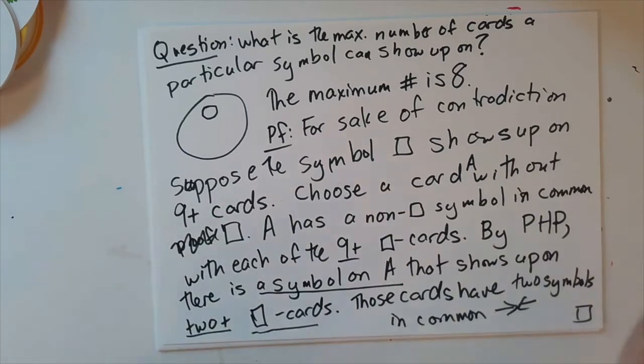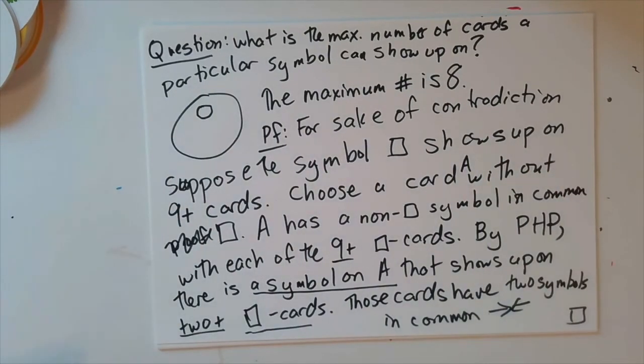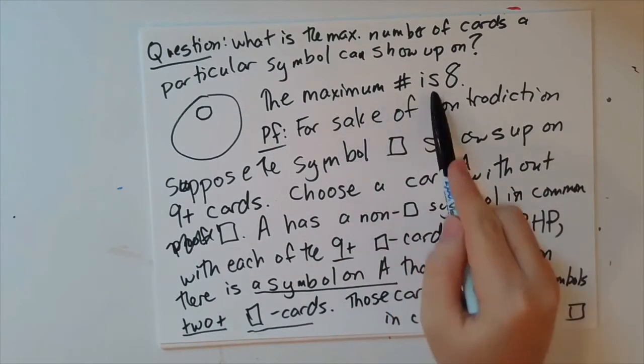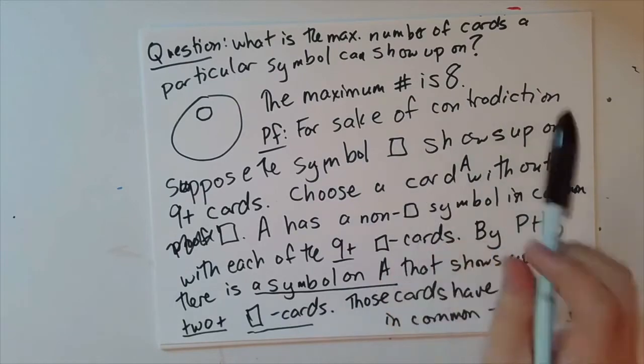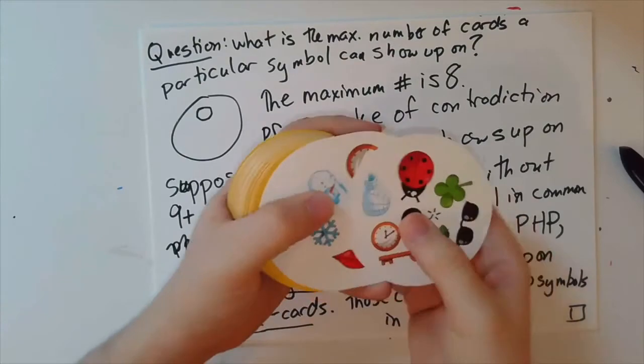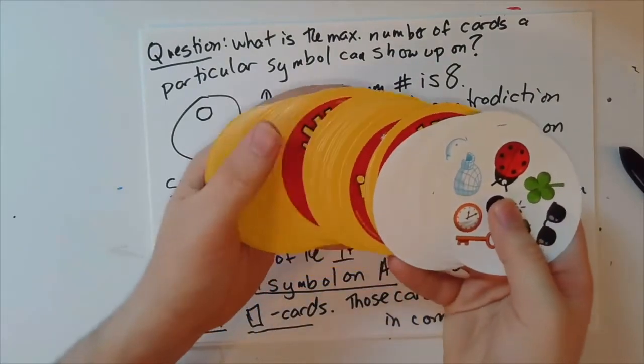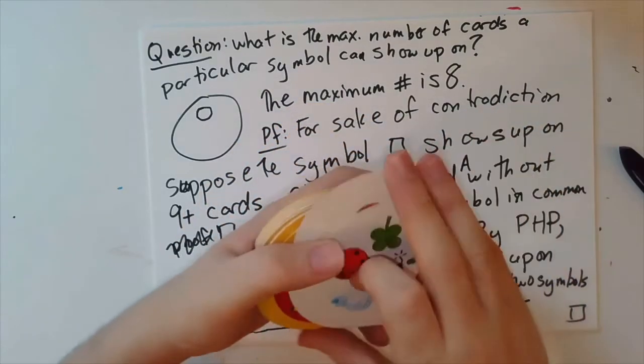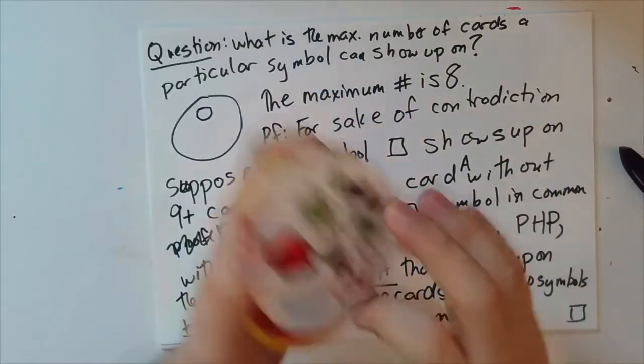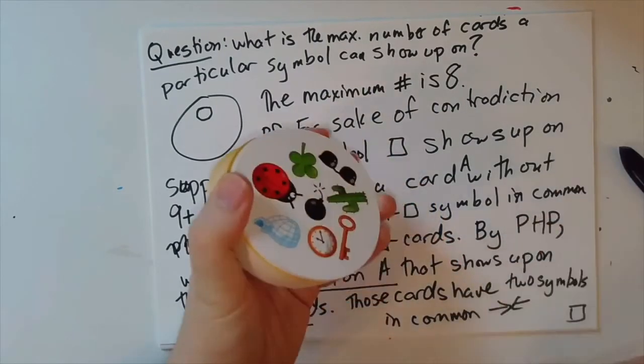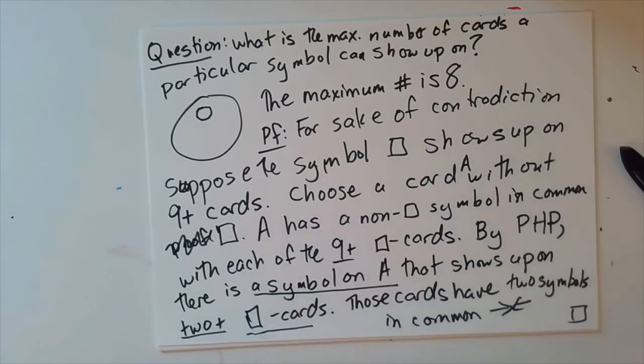And so we now know this question, the maximum number is eight. So technically, I didn't show you the maximum is eight. I showed you the maximum is at most eight. But if you believe me that this really is a Spotted deck, that it really has all these properties, then I showed you that in fact, this is a deck with eight copies of a symbol on it. And so that shows me that the maximum is at least eight. And so we've technically now shown the maximum is at least eight because this is an example, and it's at most eight by our proof. So that shows the maximum really is eight.